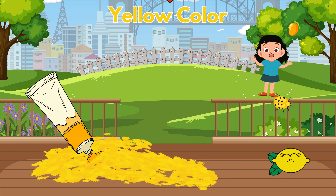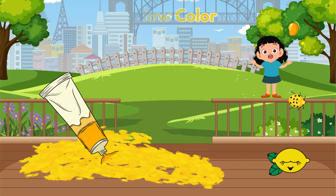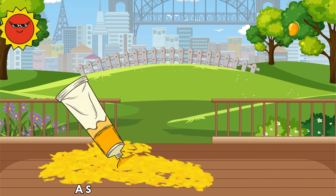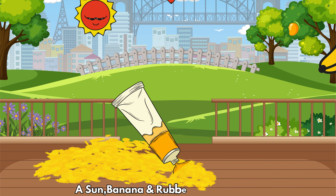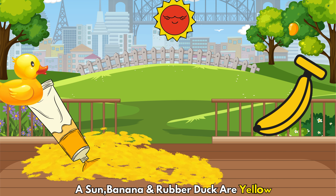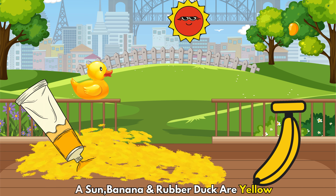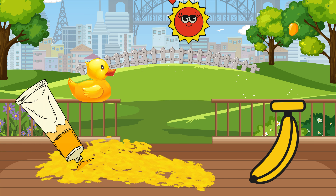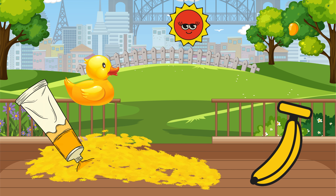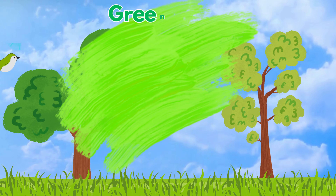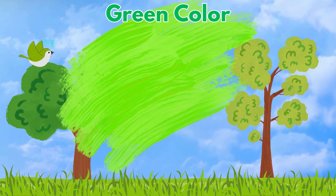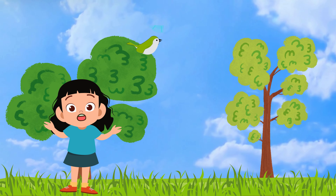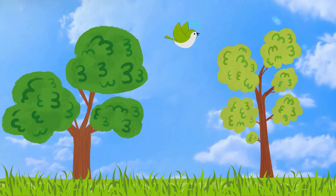Now let's learn about the color yellow. Can you identify something yellow nearby? Absolutely — a sun, a banana, and a rubber duck are all yellow. Yellow is associated with happiness and sunshine. Moving on to the color green — can you point out something green in your surroundings?